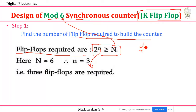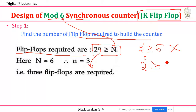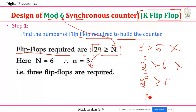Let me apply this formula. If n=1: 2 to the power of 1 is 2, which is not greater than or equal to 6 — not possible. If n=2: 2 to the power of 2 is 4, still not greater than or equal to 6 — not satisfied. If n=3: 2 to the power of 3 is 8, and 8 is definitely greater than or equal to 6 — so n=3 flip-flops are required to construct a Mode 6 counter.